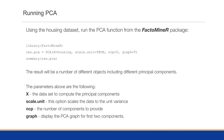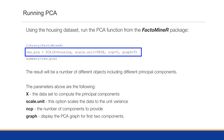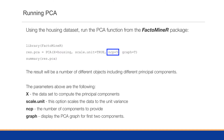Using the housing data set we'll use the FactoMineR package. We load the package and produce output into a variable called res.pca. The function takes the data set as x, scale.unit equals TRUE to normalize to unit variance, ncp representing the number of components, and graph equals TRUE to draw the graph. By specifying ncp equals 5 it will only show a five principal component solution even though there will be nine; you can change this to the total number of columns to see all components.